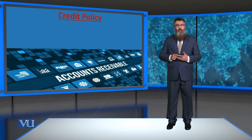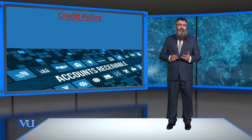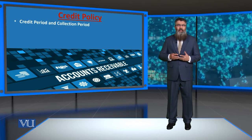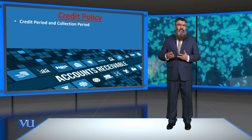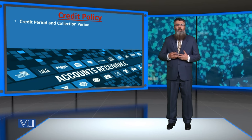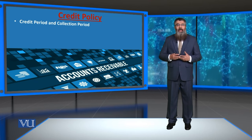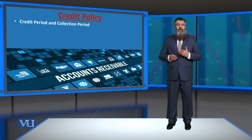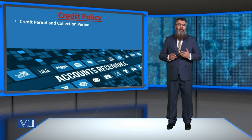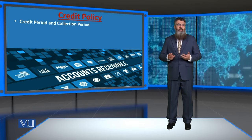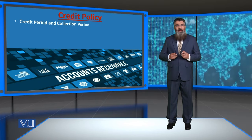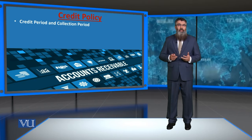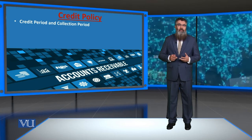Let us see what are the components — some of the essentials of credit policy. The first component is called the credit period. When we are selling to someone without collecting cash, we give our product to our customers. That agreed upon time period after which a customer has to make the payment to the company or the business is what is called the credit period.